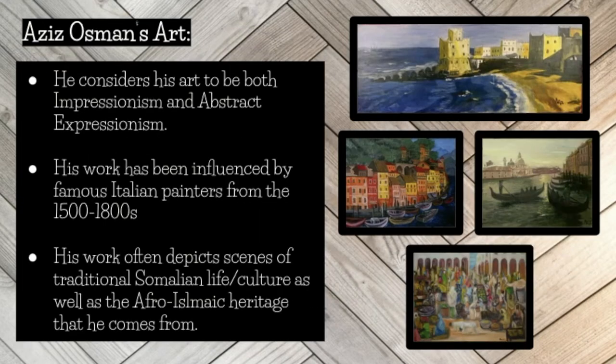Osman classifies his work as falling into the categories of Impressionism and Abstract Expressionism. A lot of his artwork depicts traditional Somalian life and culture, and also the Afro-Islamic heritage that he himself comes from. He was greatly influenced by Italian painters from the 1500s to the 1800s during his time in Italy, and another significant aspect of his art is his use of geometric shapes and bright colors to create a strong identity for his artwork.